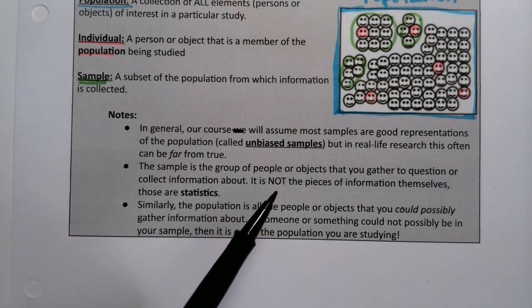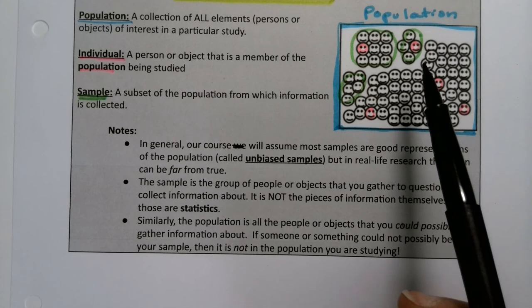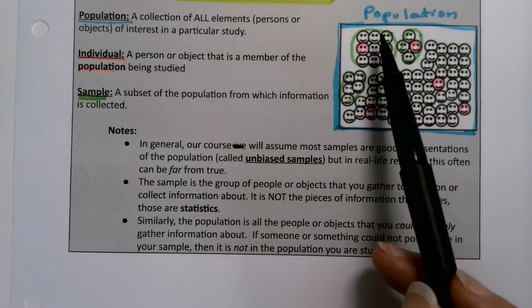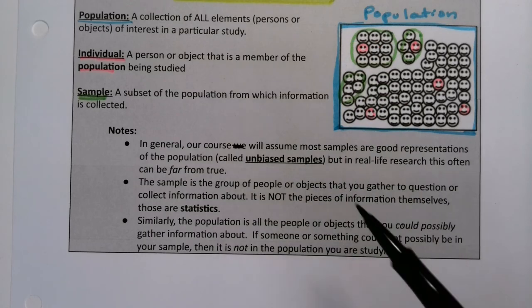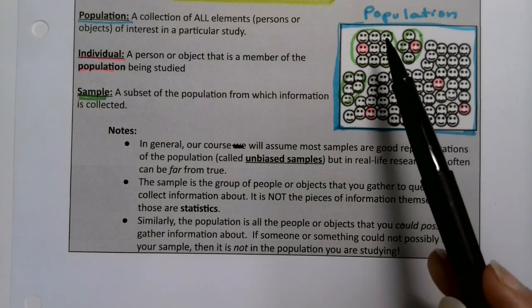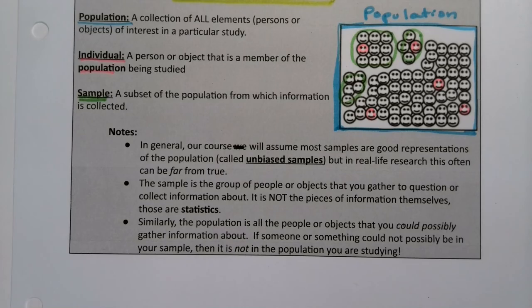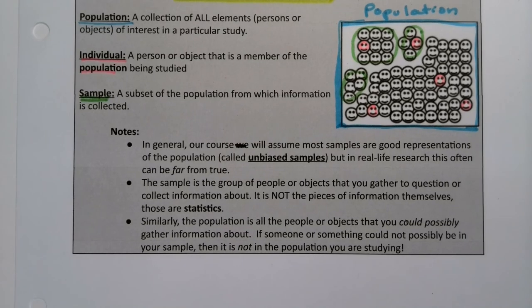The sample is the group of people or objects that you gather, not the pieces of information. So let's say I'm interested in the body temperatures of these people. The sample is not their body temperatures, the sample is the people, and then you just gather information about them. You can gather all sorts of information - their names, blood pressure, body temperature, weight. The sample is the group of patients, not the numbers. The numbers themselves are called statistics. The population is all the people or objects that you could possibly gather information about. If someone or something could not possibly be in your sample, then it is not in the population you are studying.